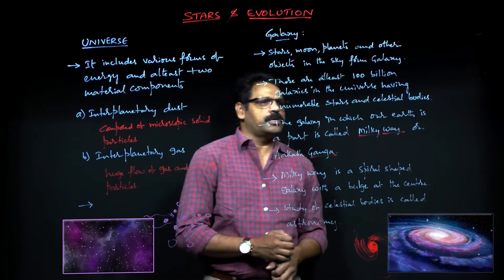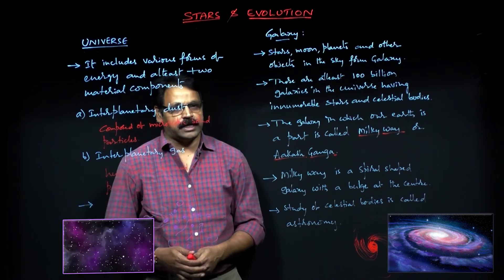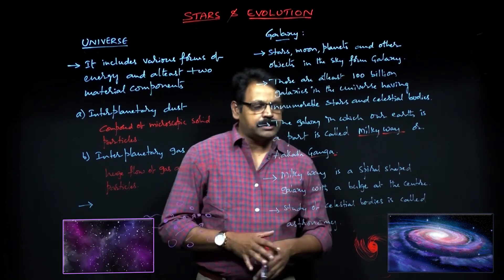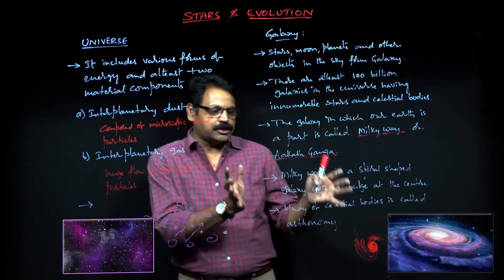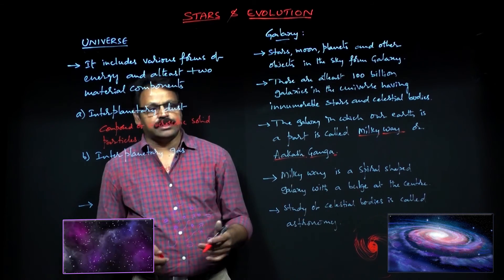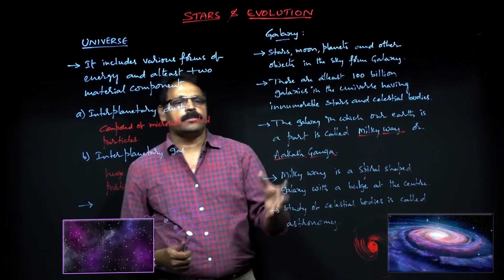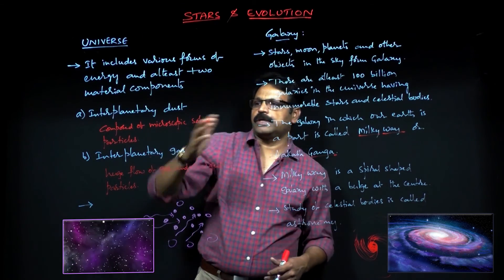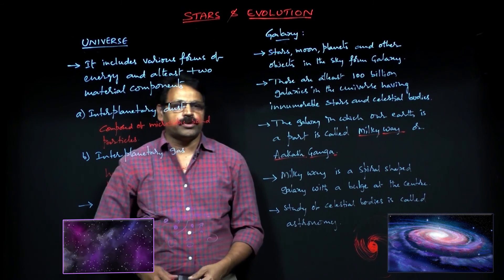Celestial bodies are nothing but components of galaxies — galaxies have innumerable stars and celestial bodies. The study of these celestial bodies comes under astronomy, and the scientists who study astronomy are called astronomers. A galaxy can be further subdivided into solar systems. For now, just have knowledge of the universe and galaxy — these are the major points you need to remember.